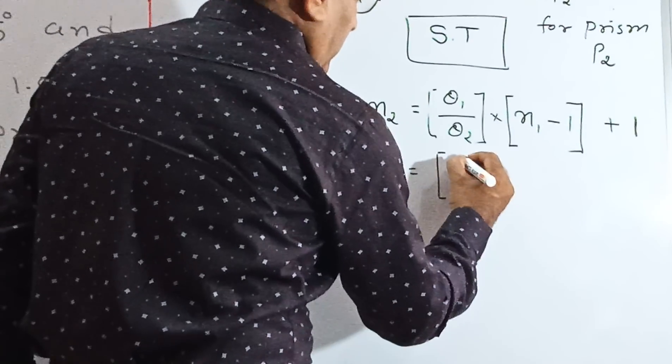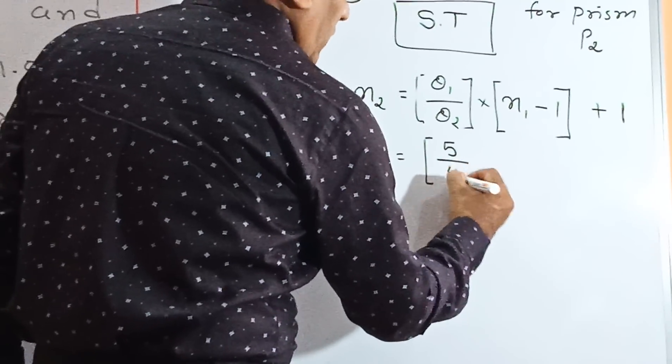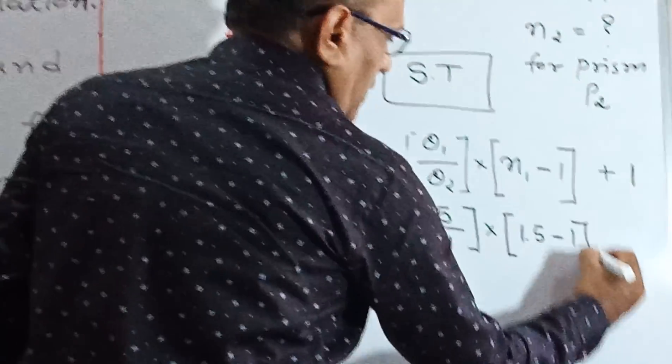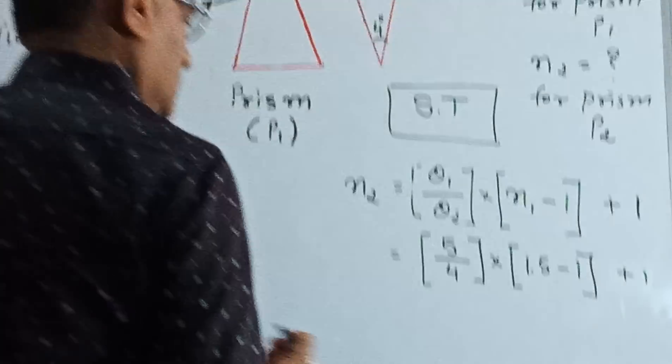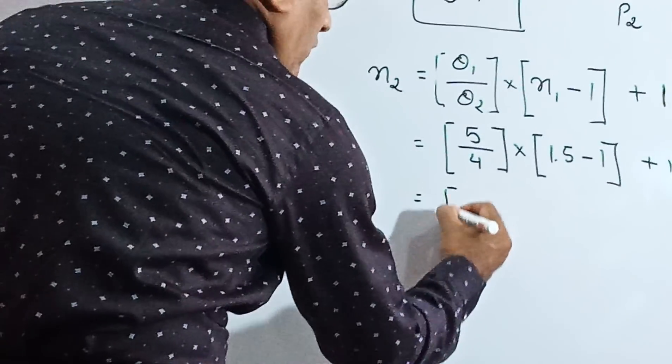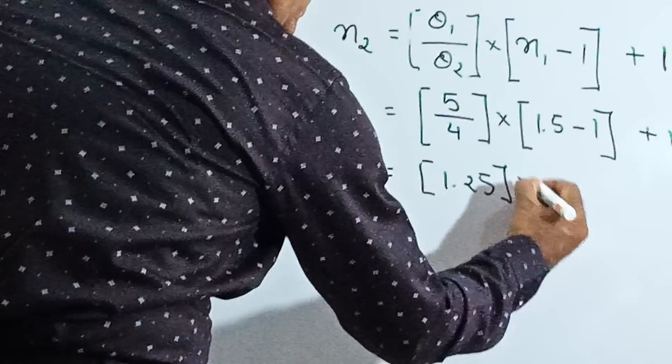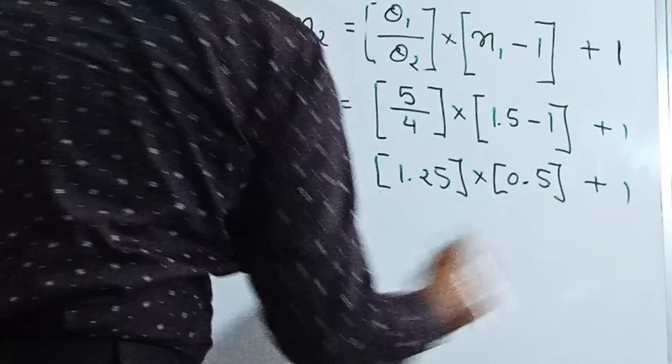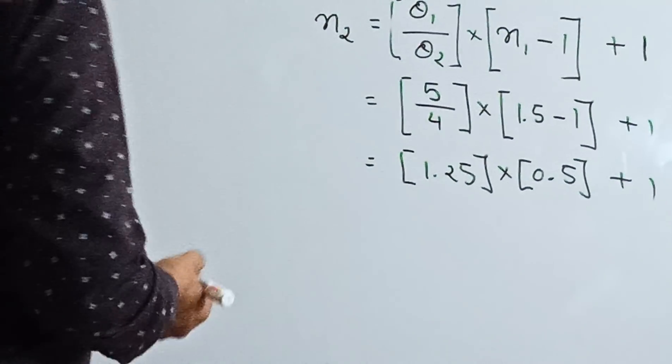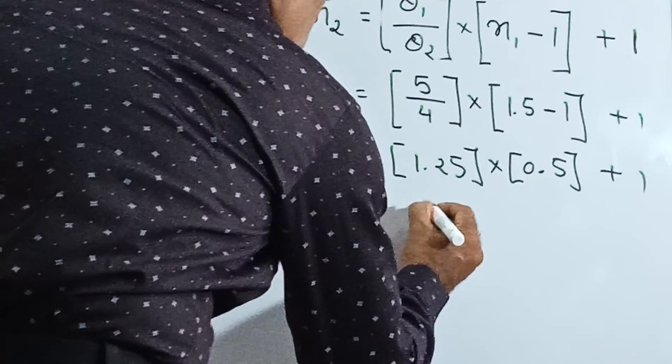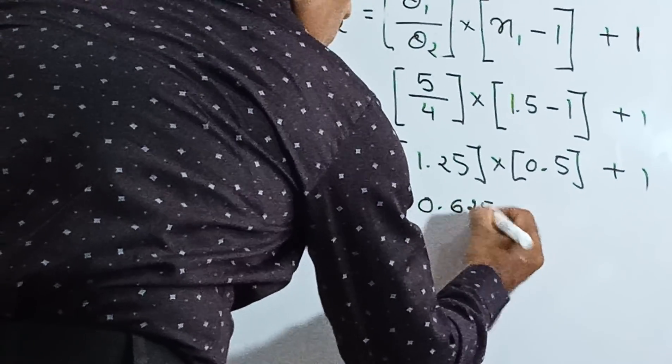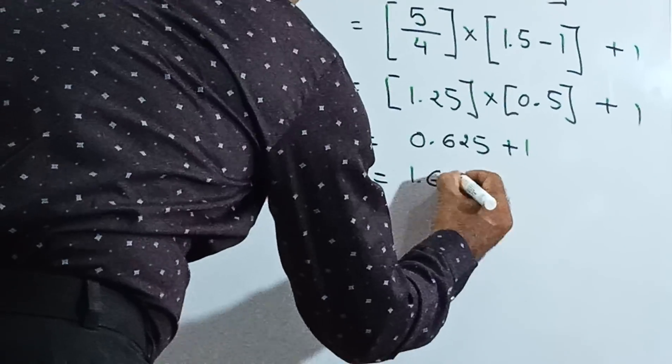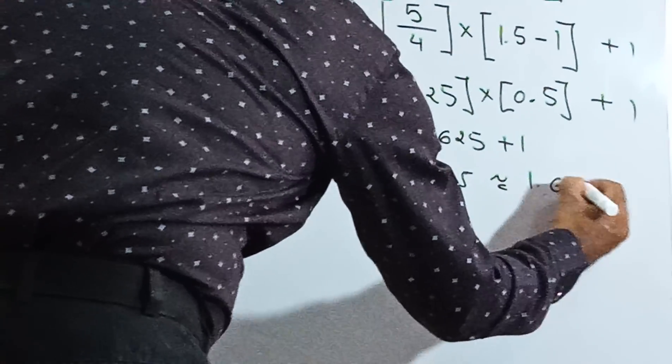So theta1 is 5, theta2 is 4. We take 5 by 4 into 1.5 minus 1 plus 1. So 5 by 4 is 1.25 into 0.5 plus 1. 1.25 into 0.5 equals 0.625 plus 1.